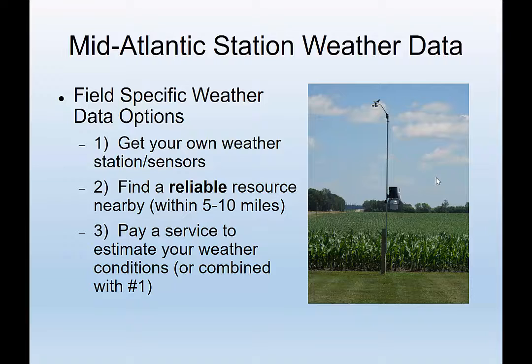Regarding station weather data, there are basically a few options for getting it. Many people go online to find the nearest weather station. Some may have their own personal station contracted through a company. Some use a service that estimates weather conditions. And some have a combined option — a weather station on their farm plus somebody flying drones to look at stress on fields, or walking through to take meter readings, providing some output from that.